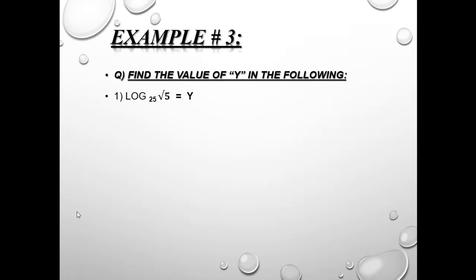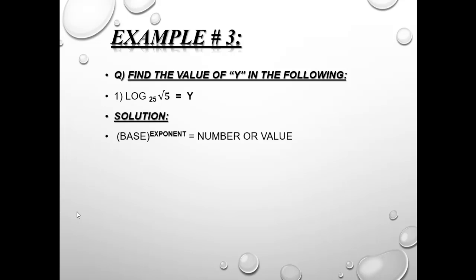Example number 3: the power is unknown. Find the value of y in the following. Substitute values into the same structure — 25 is the base, y is the power, and the square root of 5 is the value. We write 25 as 5 squared using LCM, giving 5 to the power of 2y on the left. The square root of 5 is 5 to the power of 1 over 2 on the right.